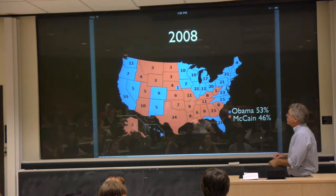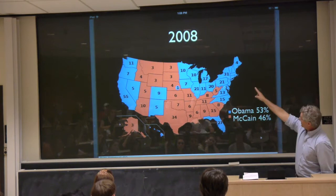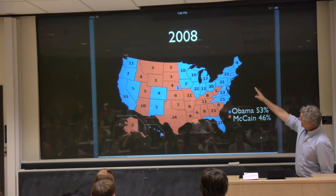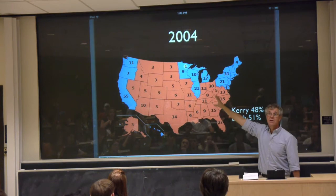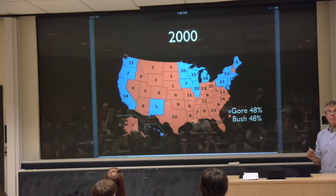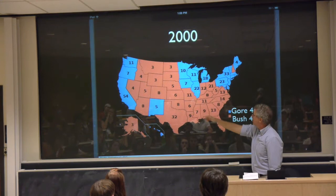Looking at recent elections: in 2008, the blue states were won by Obama and red by McCain — notice the red L. In 2004, Bush defeated Kerry, with a wider red L. In 2000, a similar L-shape, with Democrats strong in the Northeast, upper Midwest, and West Coast, and Republicans throughout that L shape.